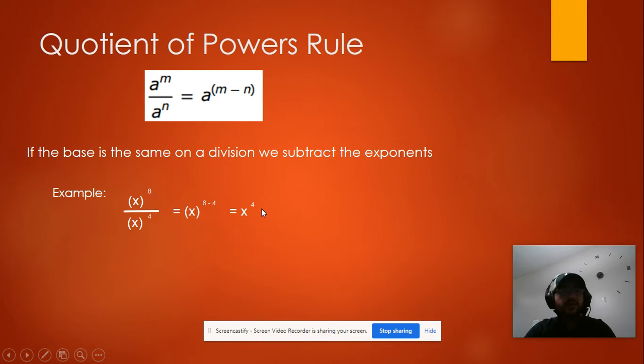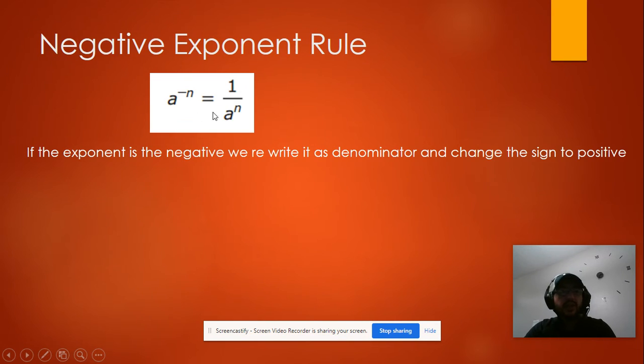Now let's see the rule for the negative exponent. When we get as an answer a negative exponent, we need to rewrite it as a denominator and we change the sign to a positive. Let's see an example.